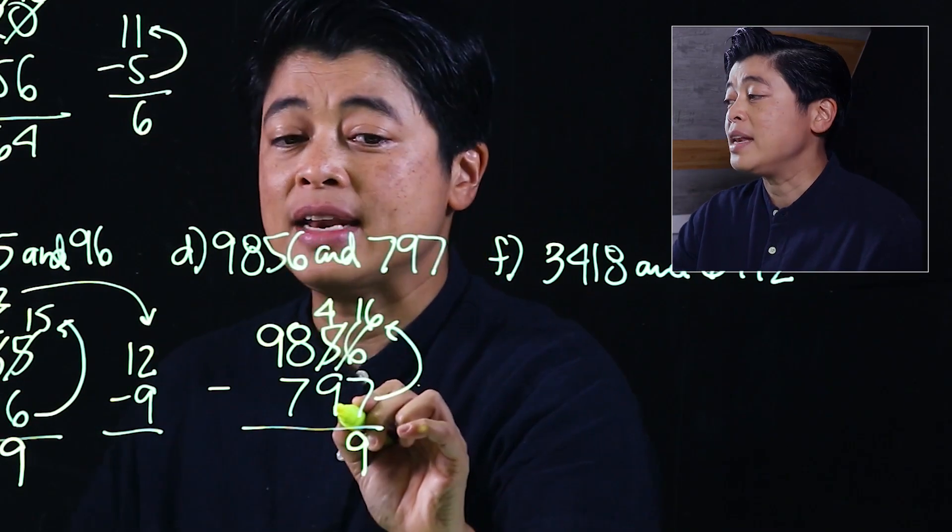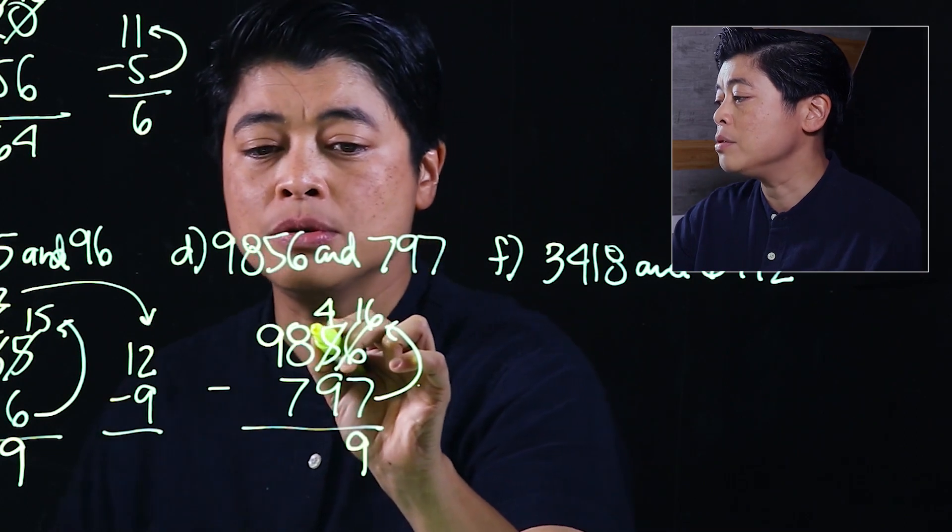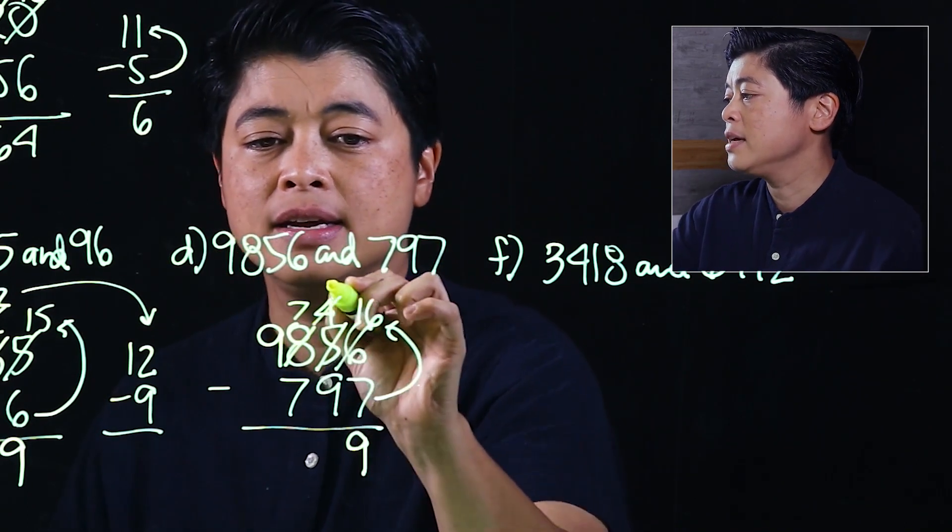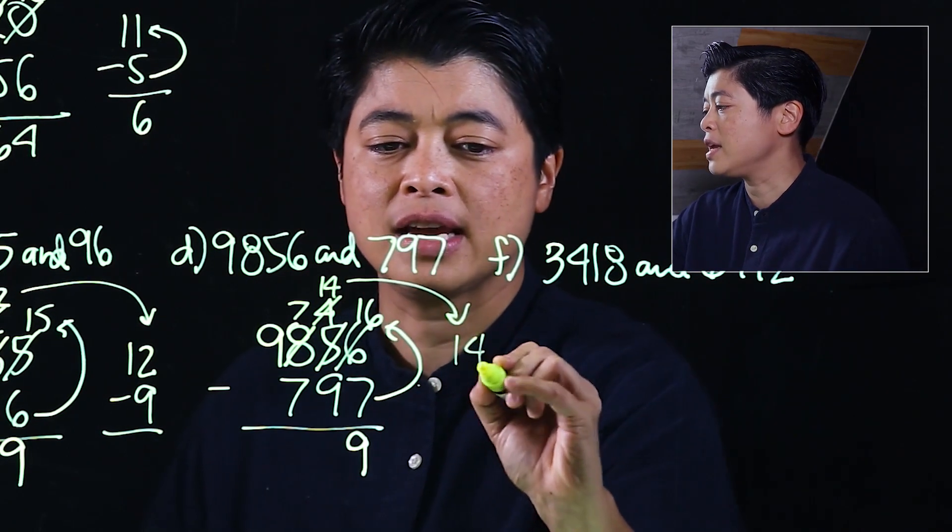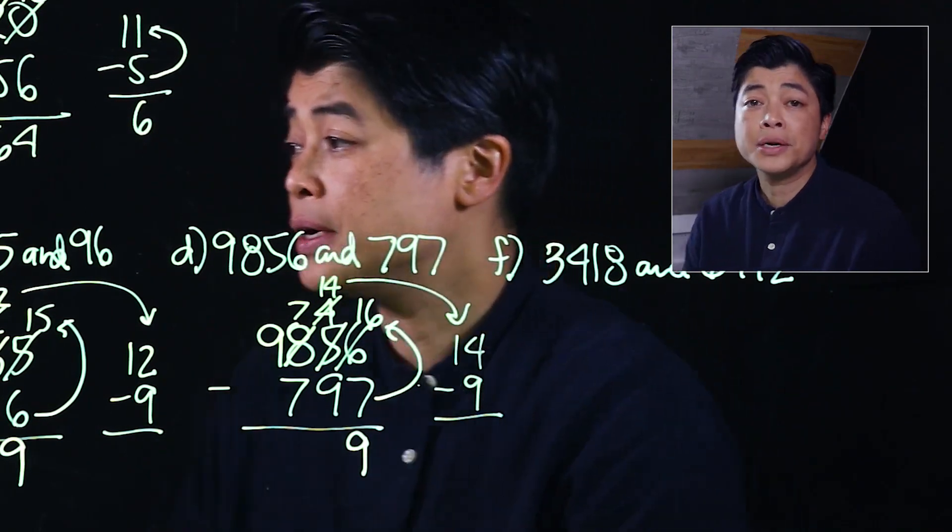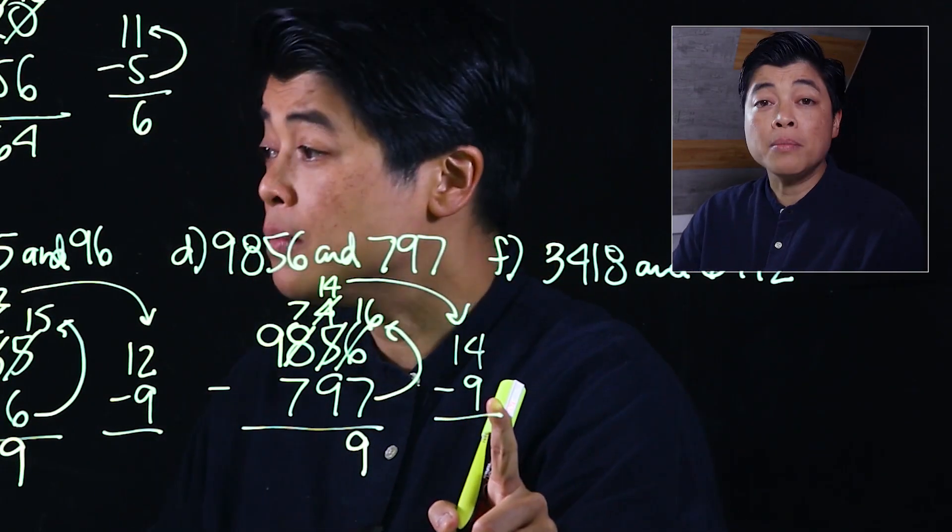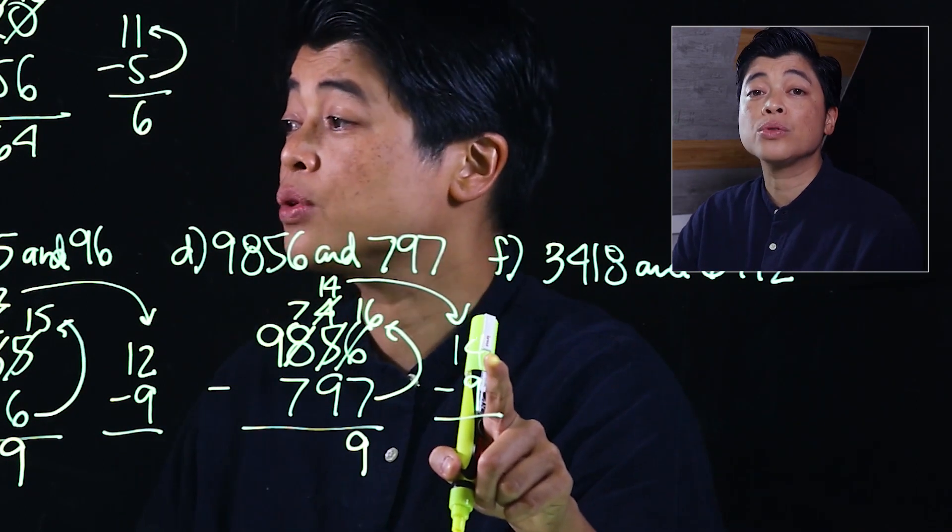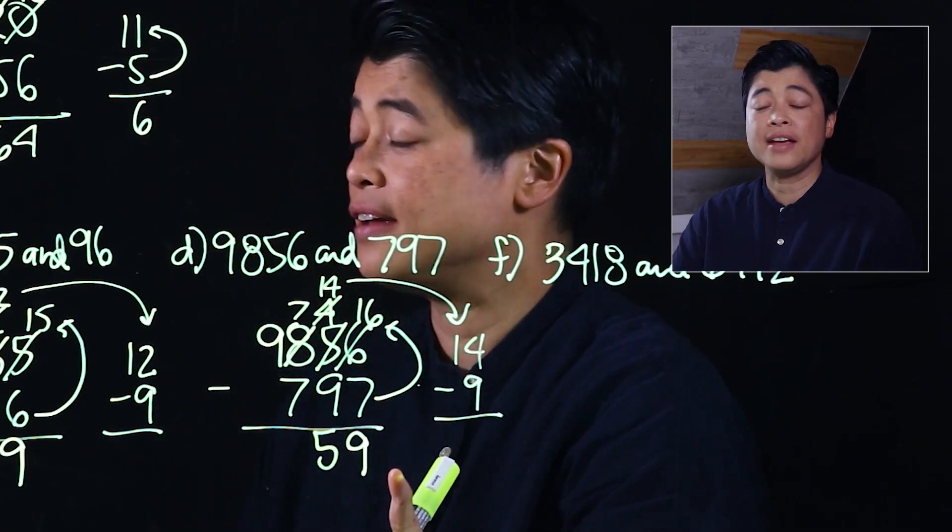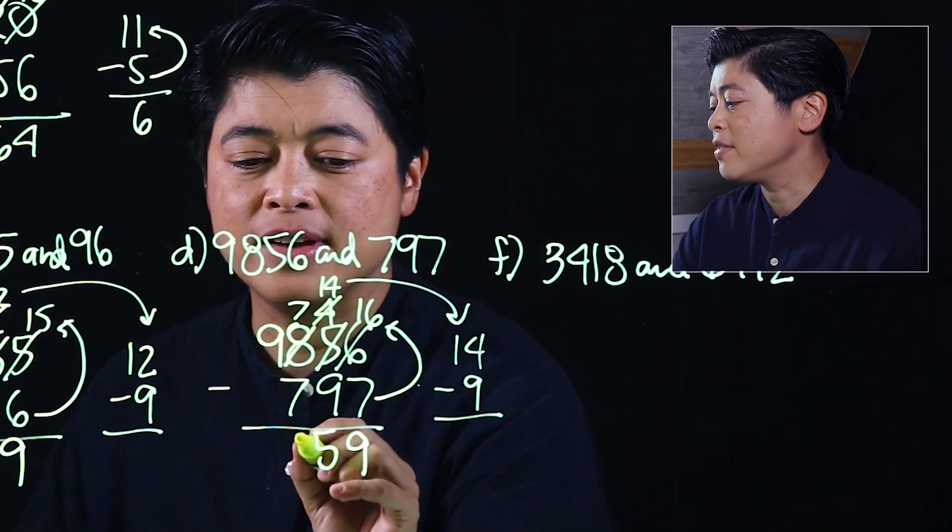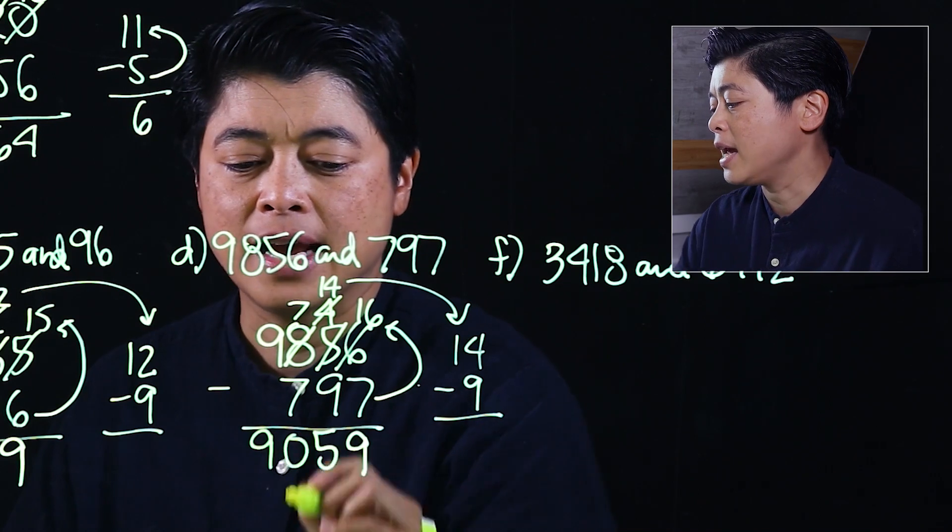We can't take away 9 from 4, so we need to borrow 7 and that would be 14. So 14 minus 9: we need 1 more to get to 10 and another 4 to get to 14, which means this is 5. And 7 minus 7 is 0, and 9. So our answer should be 9,059.